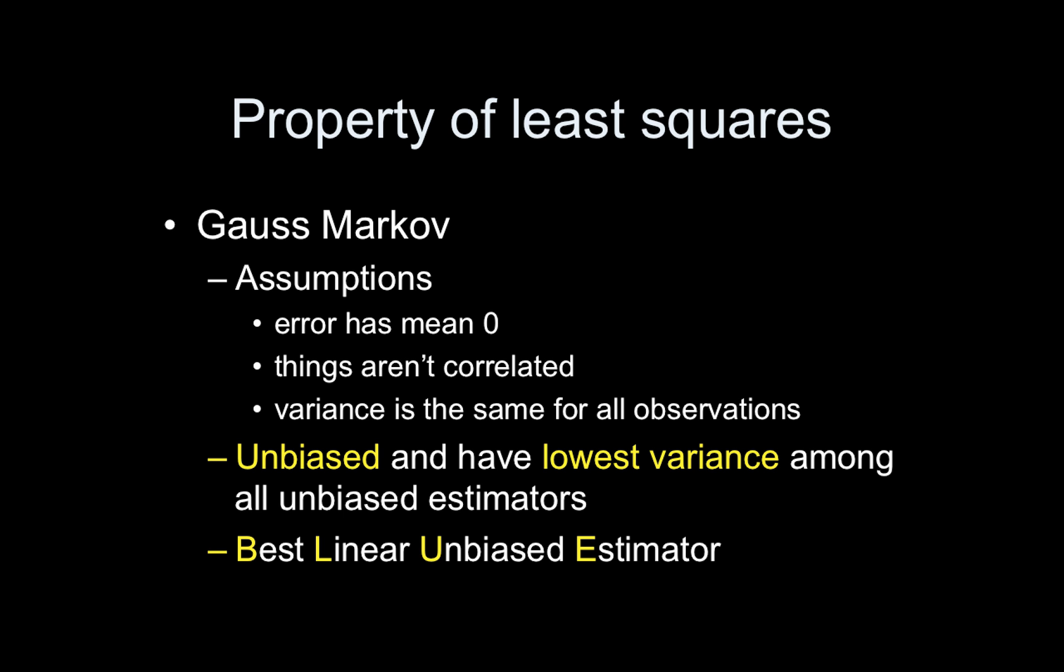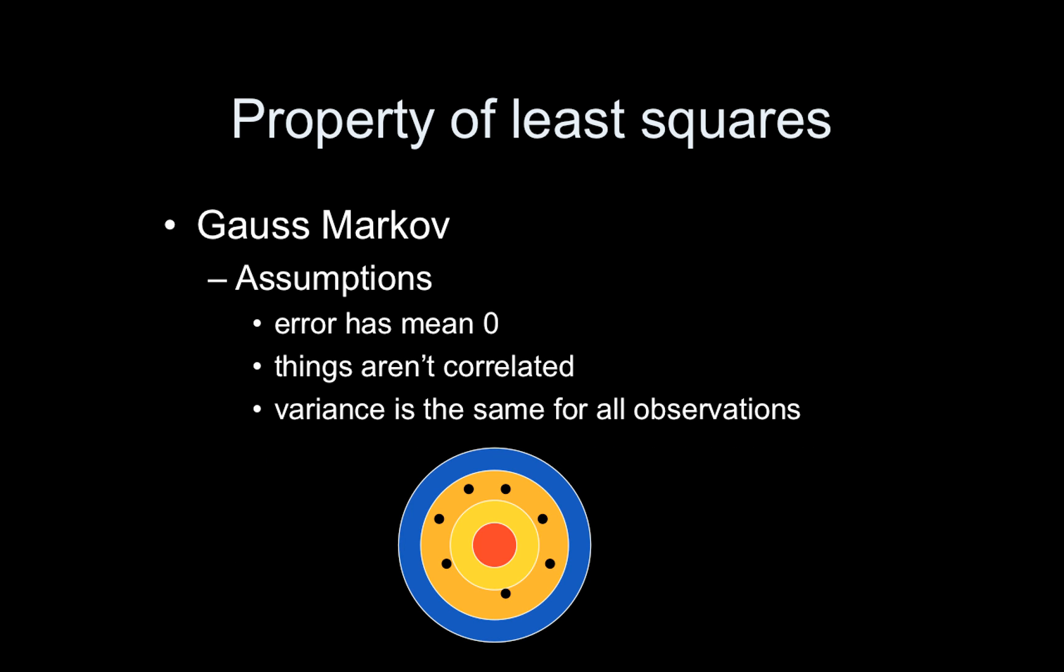This is also referred to as a best linear unbiased estimator or BLUE. I mentioned that last time. And referring back to the bias variance situations from last time, this is basically the situation here. The variance can be big, but it will be unbiased.